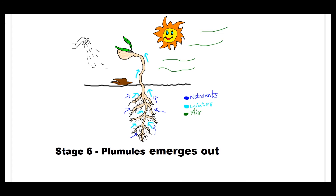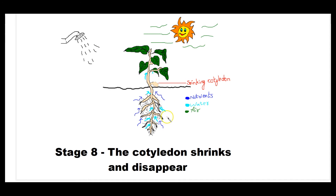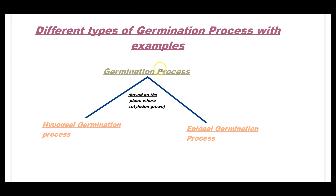Stage 6: the plumule emerges out — baby leaves emerge out of the cotyledon. Stage 7: the new plant develops. Stage 8: the cotyledon shrinks and disappears. So children, watch this video for better understanding of the germination process.